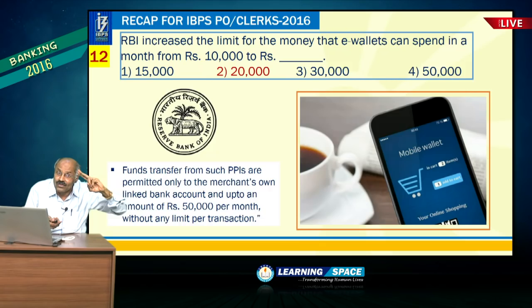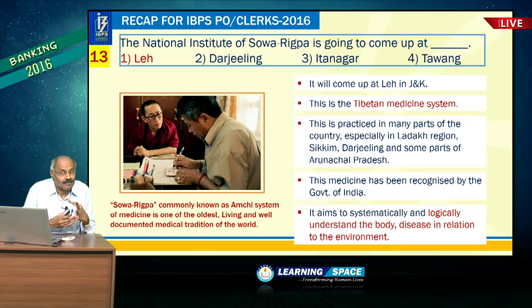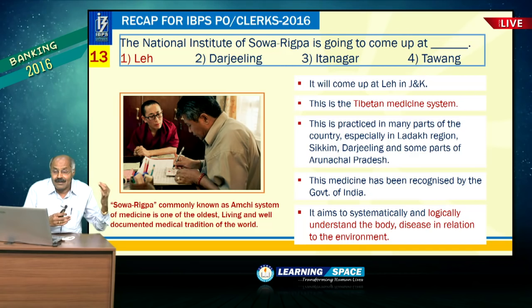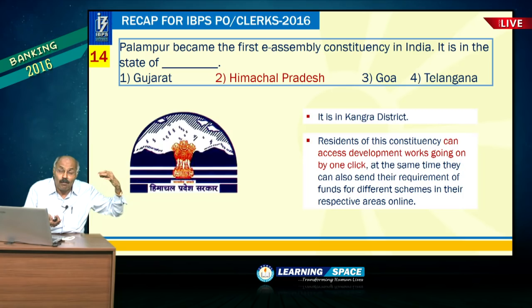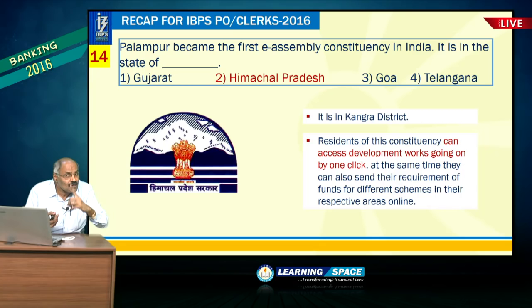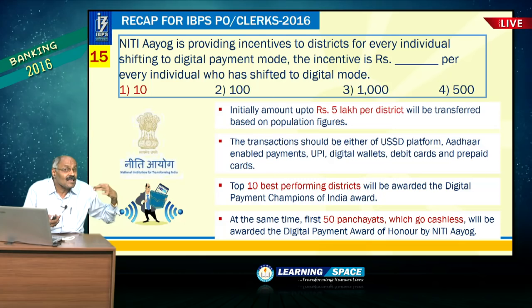National Institute of Sowa Rigpa — Sowa Rigpa is Tibetan medicine, also known as the Amchi system of medicine. The Indian government is establishing this National Institute at Leh in Jammu and Kashmir. Palampur became the first e-assembly constituency, situated in Himachal Pradesh. One can access development works by just one click.